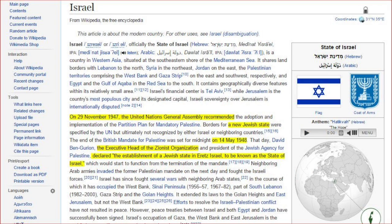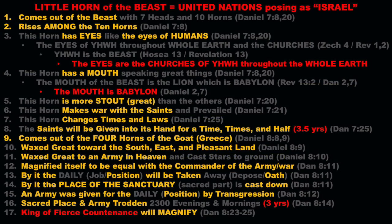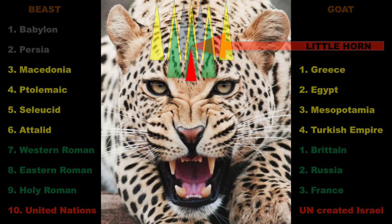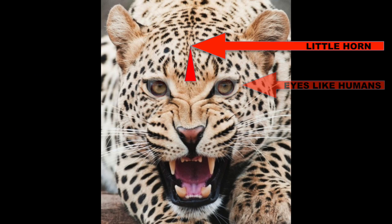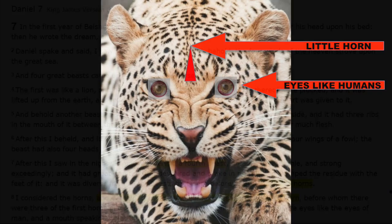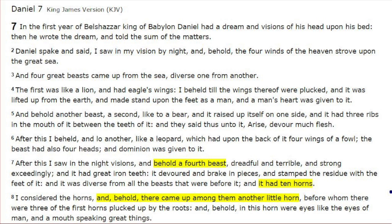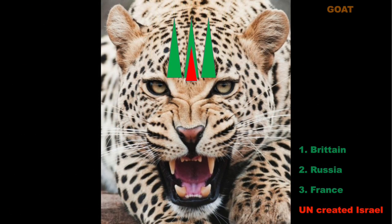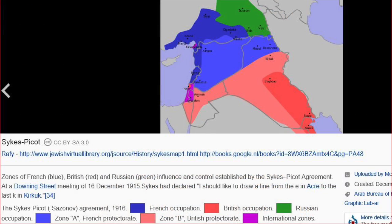The United Nations created the little horn Israel in 1947 and 48. The little horn, Daniel says, has eyes, a mouth, and a hand — all codes for something else. The eyes are like the eyes of humans in Daniel 7:8. The little horn plucked up three of the first horns, which represent the French, British, and Russian protectorates in the region when Israel was still international territory under the League of Nations.